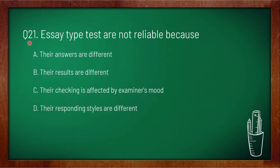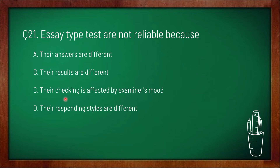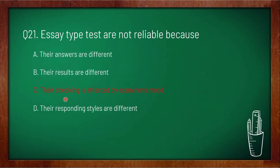Question 21: essay-type tests are not reliable because — option A: their answers are different, option B: their results are different, option C: their checking is affected by the examiner's mood, option D: their responding styles are different. Option C is correct, because the result depends on the examiner's mood, which is why essay-type tests are considered not reliable.